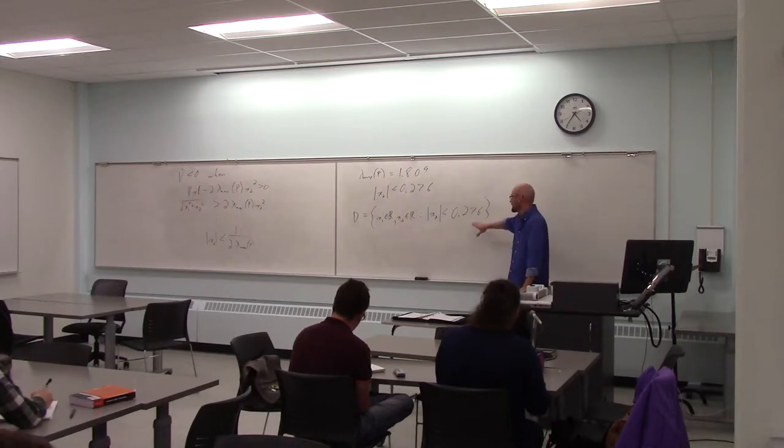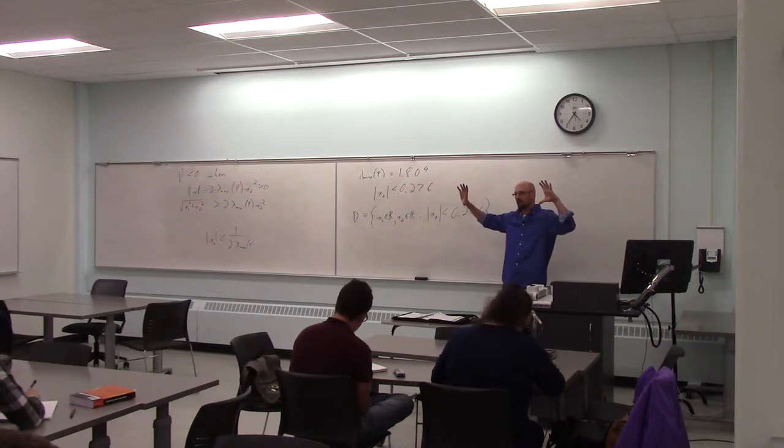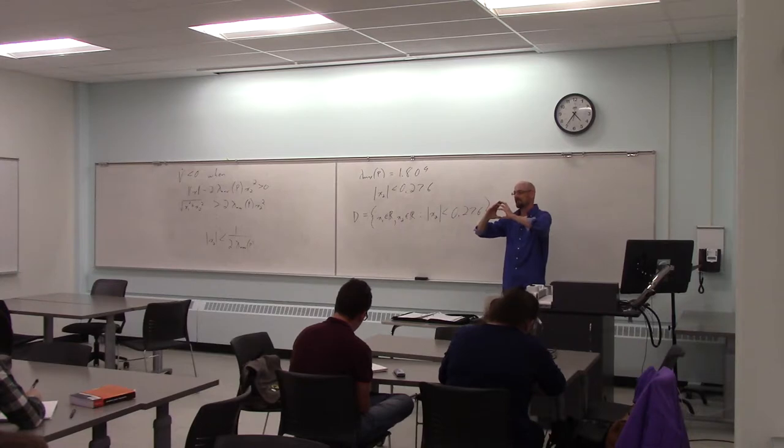So d is the region where v dot is less than 0. But we're not quite to the point where we define what we're going to call this region of attraction where it's actually stable. So we have this larger region where v dot is less than 0.